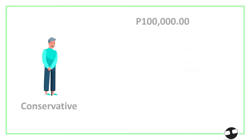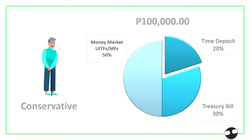If you are a conservative investor with 100,000, you can do this type of portfolio diversification: 50% (50,000) in money market funds or investment funds like UITFs or mutual funds, because they are very liquid — you can withdraw anytime without any implication to your capital. Then 20,000 in time deposit and another 30,000 in treasury bills. Time deposits and treasury bills have lock-in periods, so you cannot withdraw anytime, but in return they give you extra interest rates and extra returns compared to money market funds.